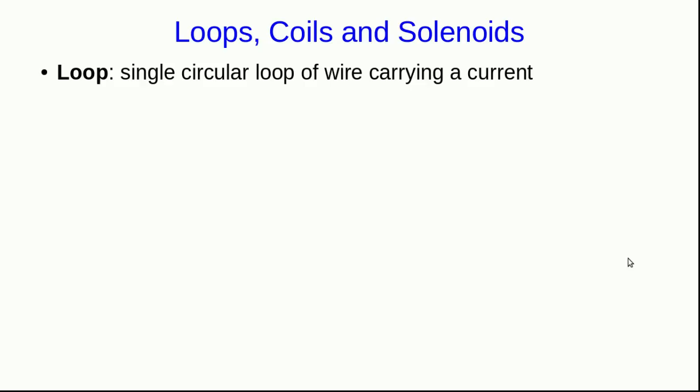Students often get confused about the terminology, the difference between loops, coils, and solenoids. A loop is simple—it's just a single circular loop of wire with a current in it. A coil is multiple loops on top of each other, and by on top of each other, I mean that they're really all in exactly the same place. All of the loops have the same radius, and they're not displaced from each other.